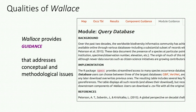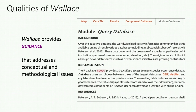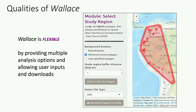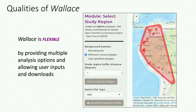Wallace also provides guidance. With a lot of GUIs, the user points and clicks through the analysis without really learning much about what's going on. We made sure to add guidance text that addresses conceptual and methodological issues and provides references to the literature. Wallace is also flexible — it provides multiple analysis options and allows user inputs and downloads at most stages. One of the main problems with the Maxent GUI was its inflexibility, so we made sure with Wallace that you could explore different analysis workflows and compare them.